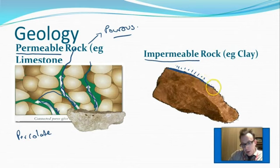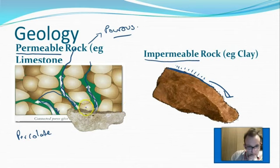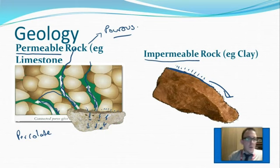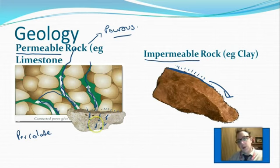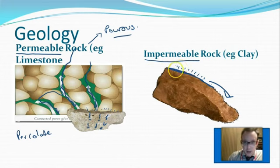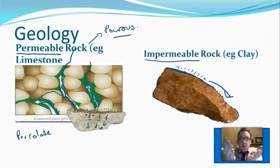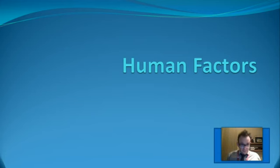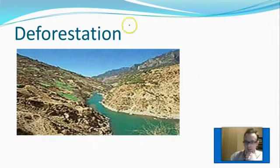In impermeable rock, percolation can't happen. If it rains on impermeable rock — like a clay-based rock — water sits on top and runs straight off. Where the geology is made up of permeable rock, it's less likely to flood because some water will percolate through. Where the geology is impermeable rock, it's more likely to flood because the water sits on top, runs off faster, gets into the river quicker, the discharge goes up, and there's a higher chance of flooding.